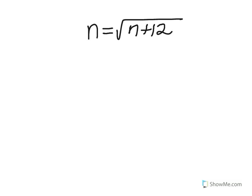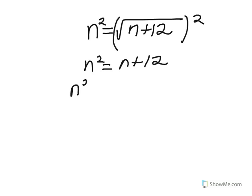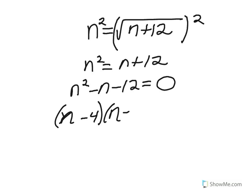Okay, so again, the radical is already isolated. So we are going to immediately square both sides. We end up with n squared is equal to n plus 12. In order to solve this, we need to subtract everything to one side, thus setting our trinomial equal to zero.